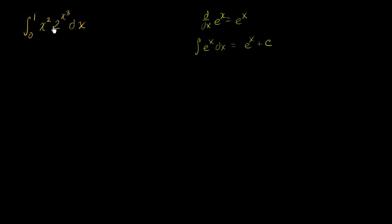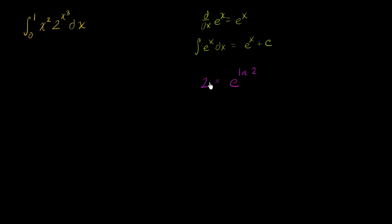Since I'm dealing with something raised to a function of x in this particular situation, it seems like I might want to change the base. The way I would do that is re-express two in terms of e. Two is equal to e raised to the power you need to raise e to in order to get two — that's the natural log of two. The natural log of two is the exponent you raise e to in order to get two, so if you actually raise e to it, you get two.